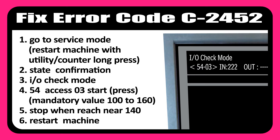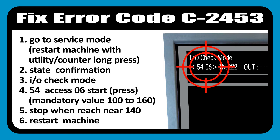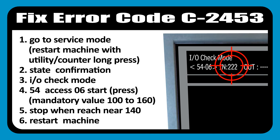Simply start the machine with long press utility/counter, then select state confirmation, then select IO check mode, then press 54 access 06 and press start. Stop when it reaches near 140. The mandatory value is 100 to 160. After reaching the mandatory value, restart the machine.